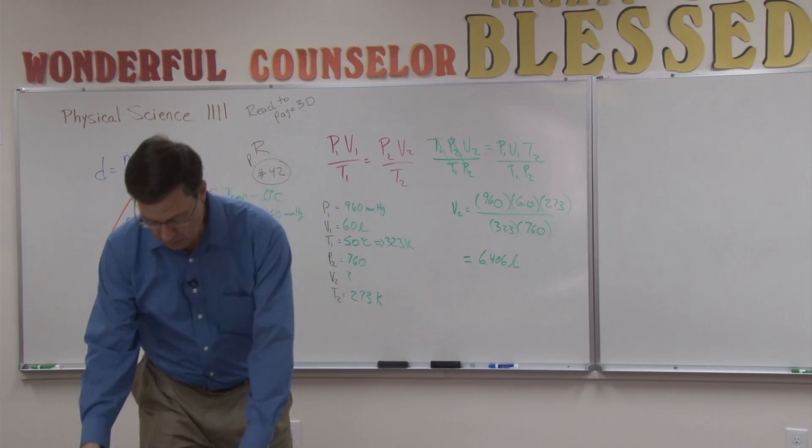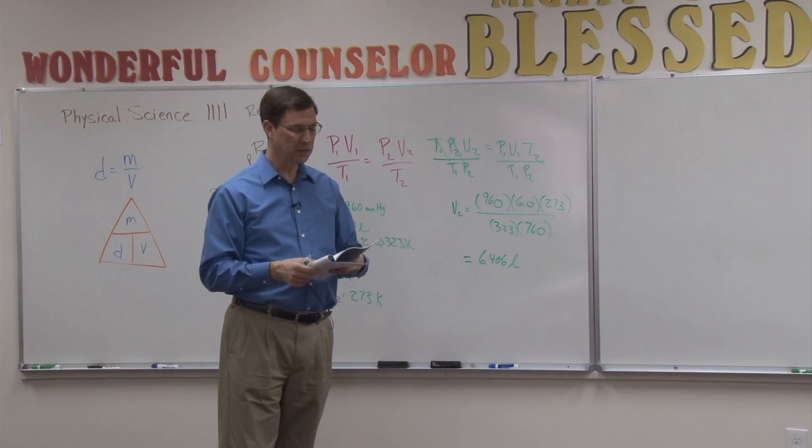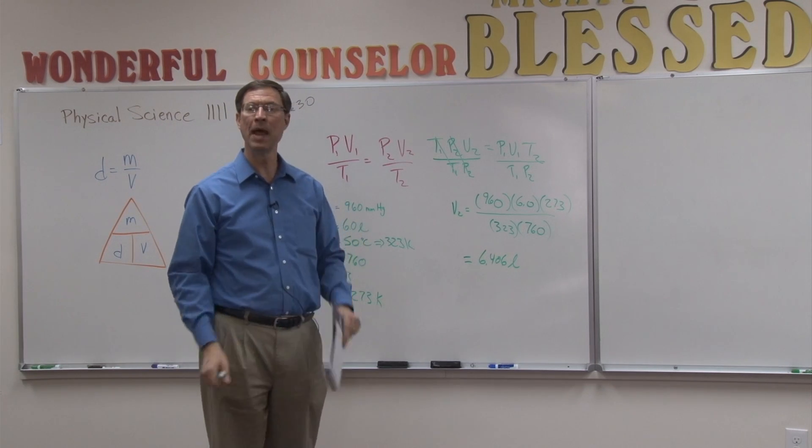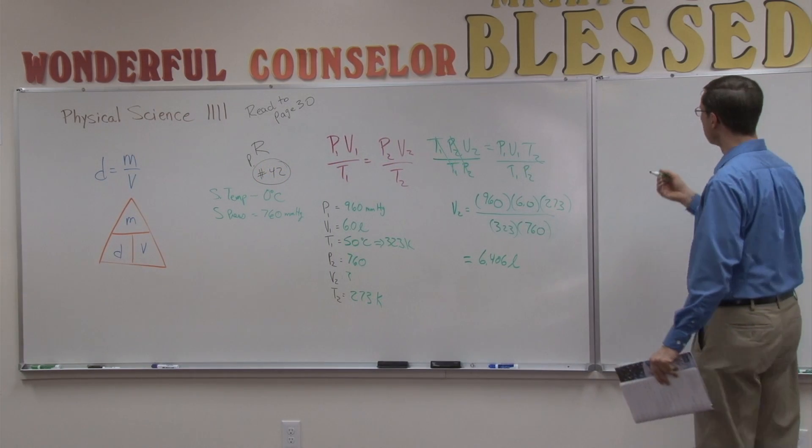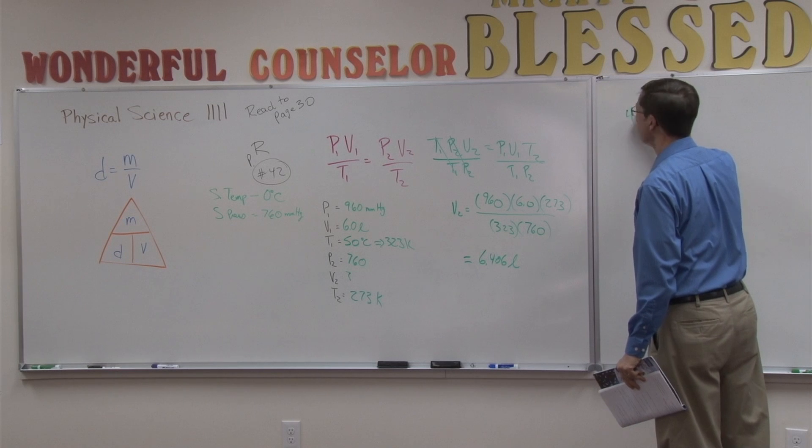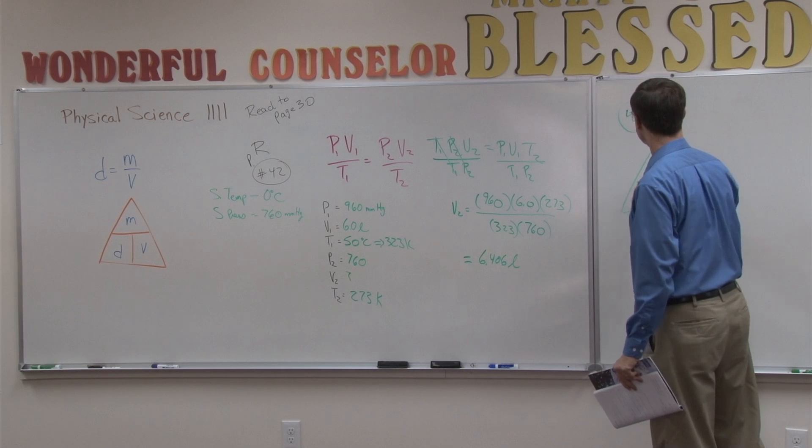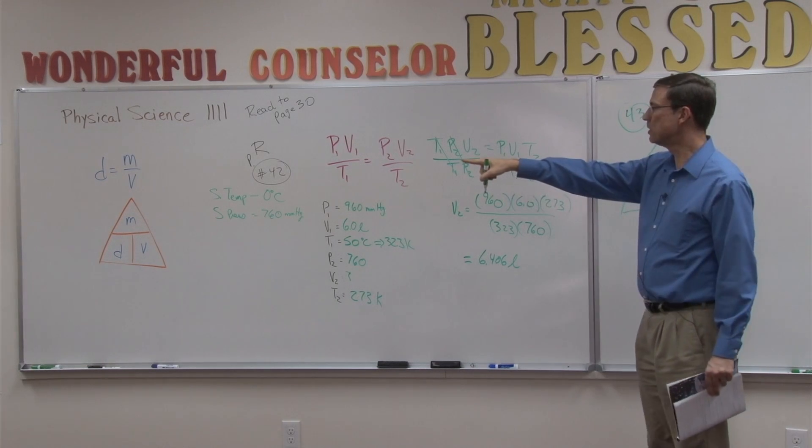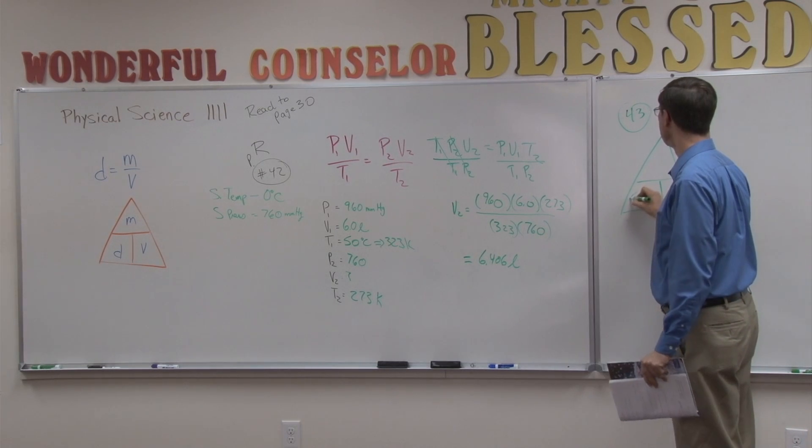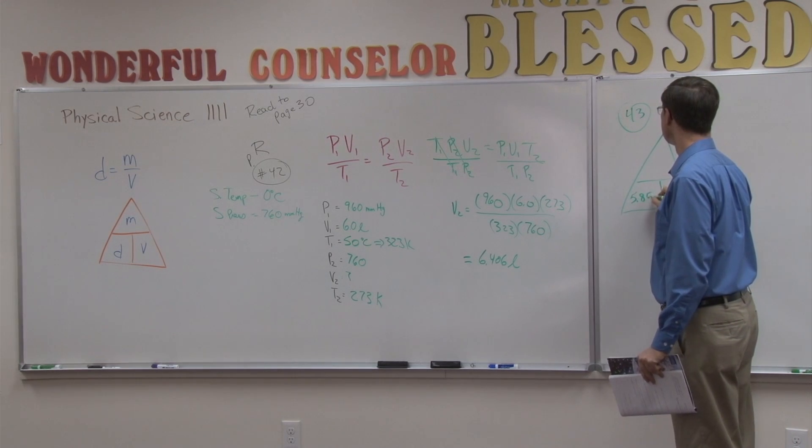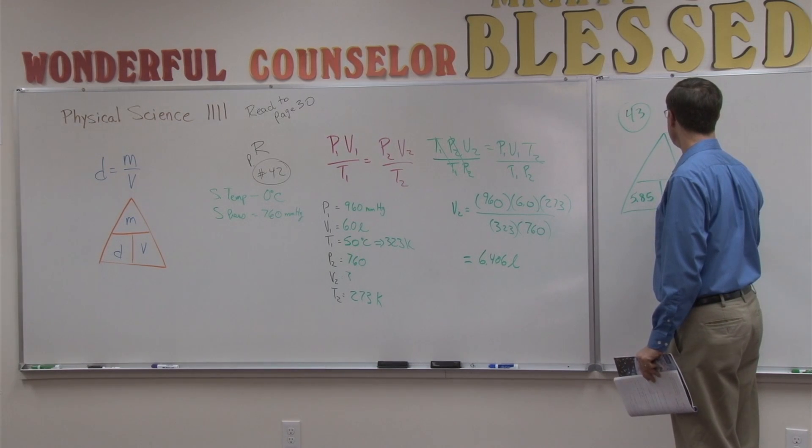Now, that's the answer to 42, but if you turn the page, the next question at the top of the page, question 43, says, What is the mass of xenon in the previous problem if the density is 5.85? So, I'm going to set up the magic triangle, and notice the mass is what we're solving for. The density the problem gives us is 5.85, so I'm going to plug that in for density. The volume we just found to be 6.406.